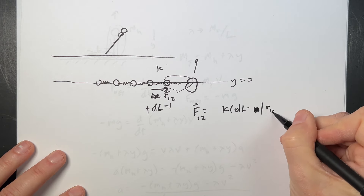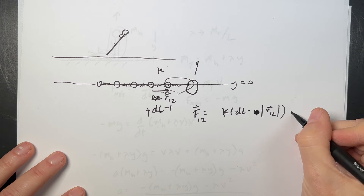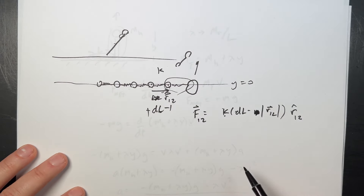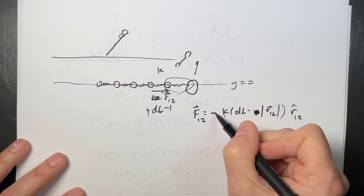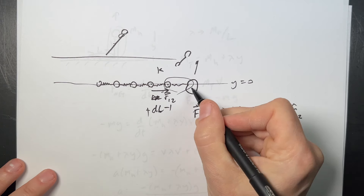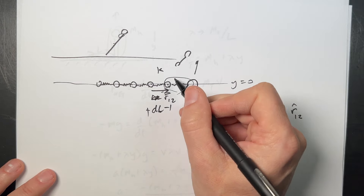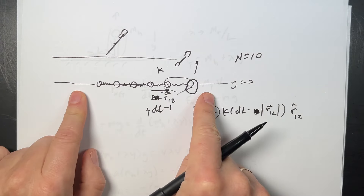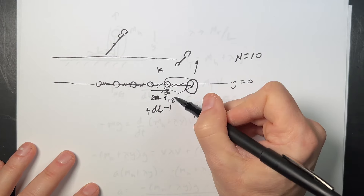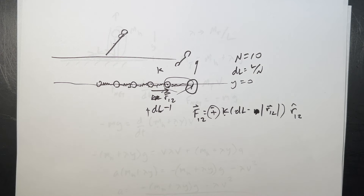That gives a scalar spring force magnitude, and multiplying by the unit vector makes it a vector — important because the direction matters depending on whether the ball is above or below. Now let's make the balls. I want n equals 10 balls in a list. I'll start with one ball and add the next, each separated by dl equals l over n, moving over dl each time to the left.